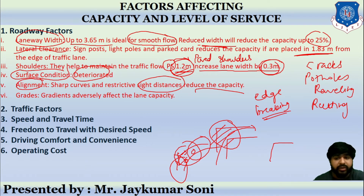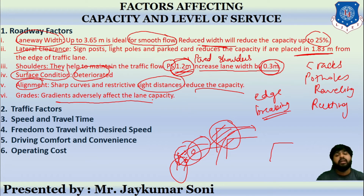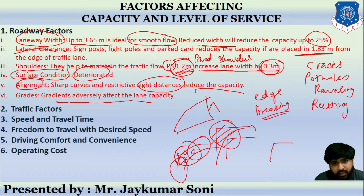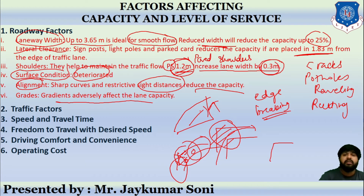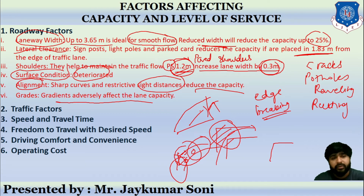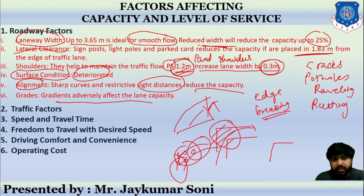Gradient also adversely affects lane capacity. If a road has a steep gradient, fewer vehicles will use that particular stretch. In summary, we have learned that roadway factors, traffic factors, speed and travel time, freedom of travel at desired speed, driving comfort and convenience, and operating cost all affect capacity and level of service.